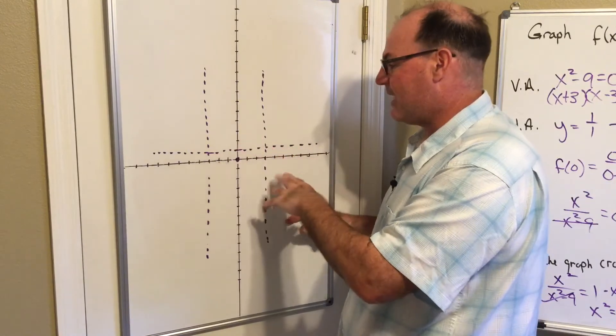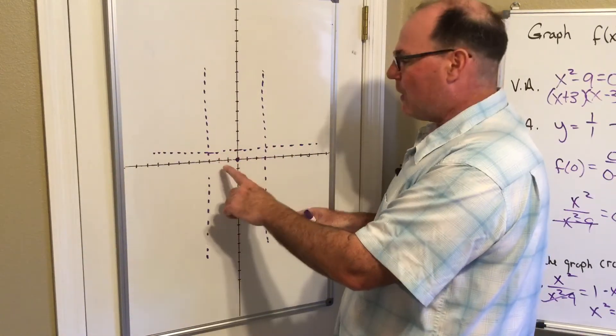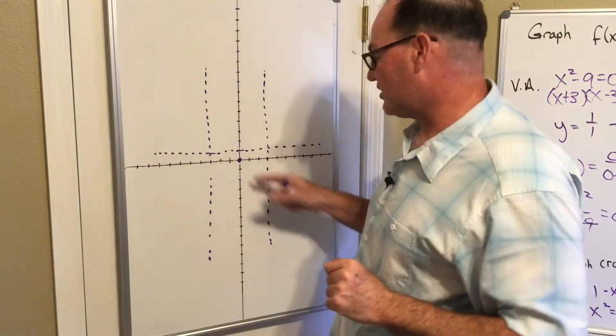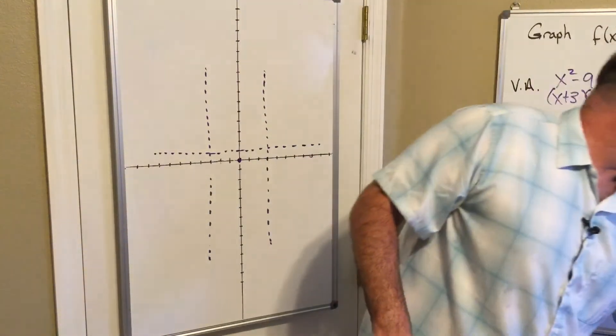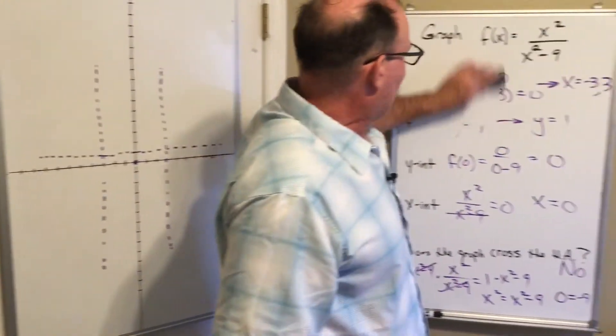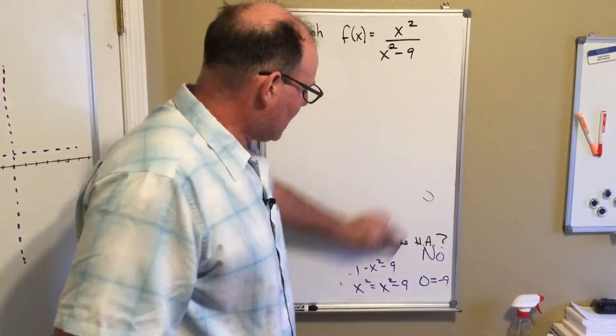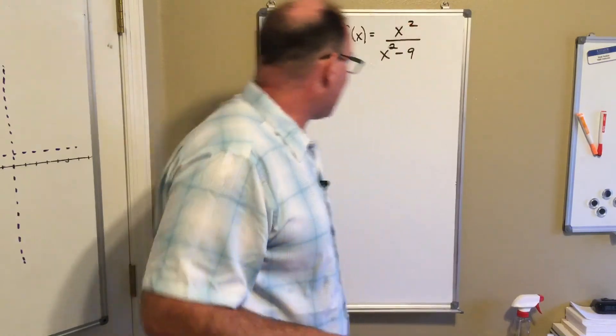And then here, just to get a feel for what's going on, I'm going to plug in negative two and positive two to get an idea of what's going on between those vertical asymptotes. So I'm going to come back over to this board and plug in these values.